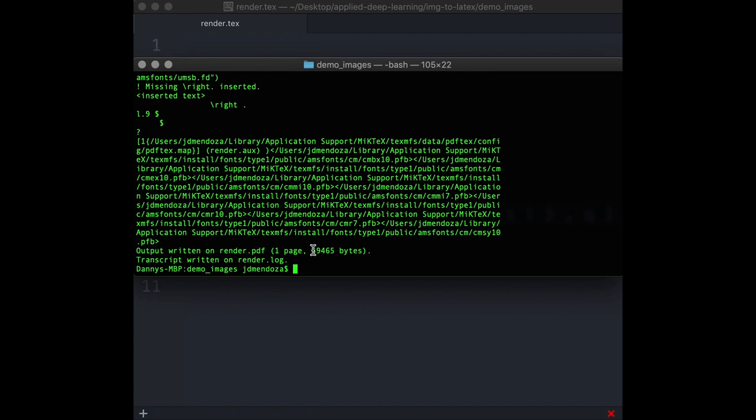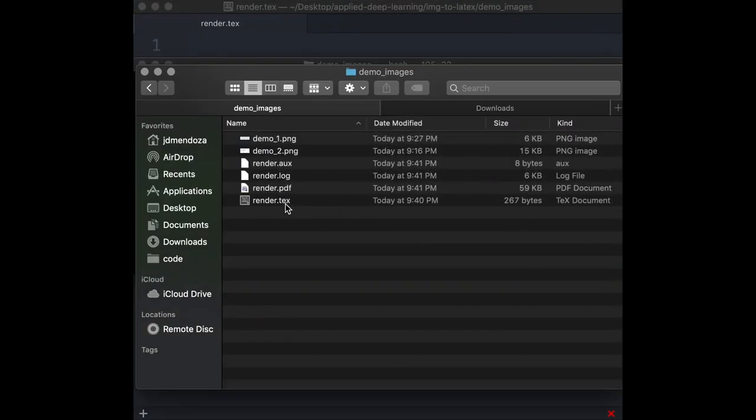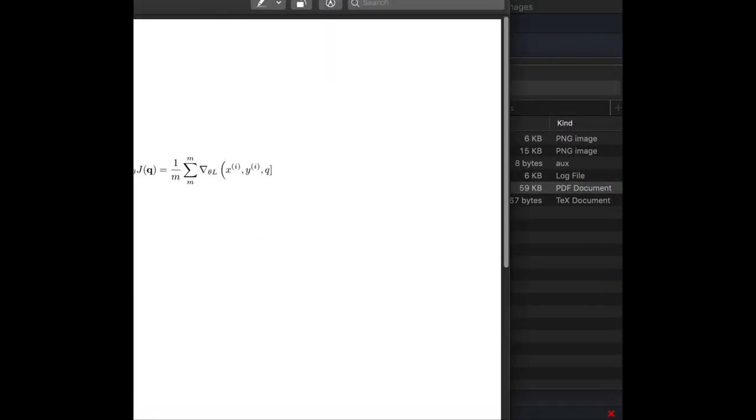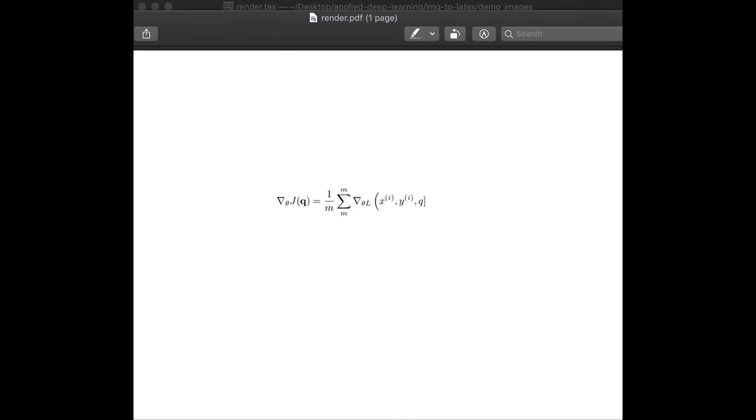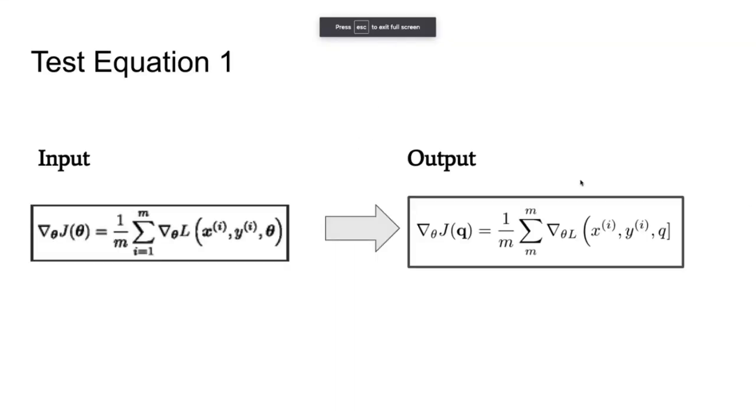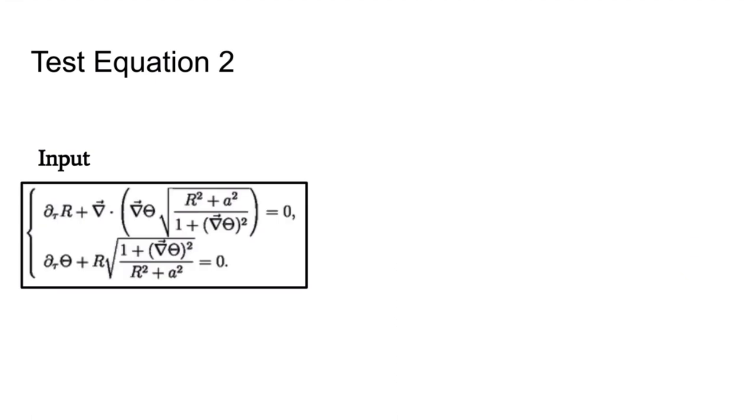And that's the equation that it predicted. So this is the input and output side by side, so it did pretty good. It did confuse a theta for a Q, and then it made the L a subscript and also the bottom of the Sigma, but it's pretty good.